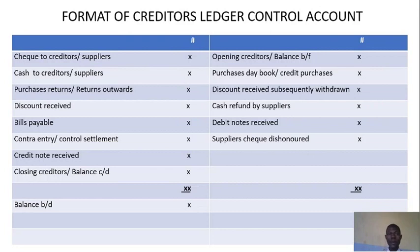Now we have the format of Creditor's Ledger Control Account. We have items at the debit side as well as items at the credit side. At the credit side, the first thing we start with is opening creditors or balance brought forward of creditors. We have credit purchases, discount received subsequently withdrawn, cash refund by suppliers, debit notes received, and suppliers' cheque dishonoured.